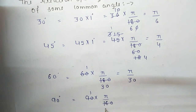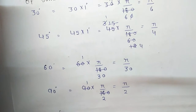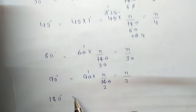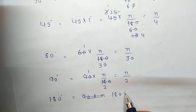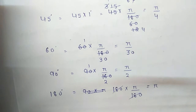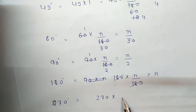90 degrees equals 90 × π/180 = π/2. 180 degrees equals 180 × π/180 = π. 270 degrees equals 270 × π/180 = 3π/2.